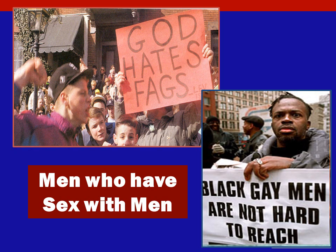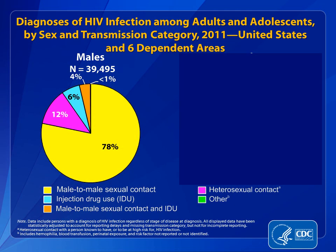The people who have probably received the most stigma and discrimination related to HIV infection in the United States are men who have sex with men. If we look at a chart of all men in the United States who are living with HIV infection, you can see that 78% of them were infected by having sex with other men. Heterosexual sex is also a risk factor for men, as well as injection drug use.